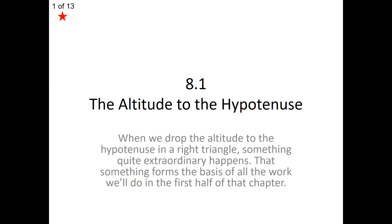Hello, this is Mr. Gemmler with the 8.1, the altitude to the hypotenuse lesson. What we're going to see today is a couple of things we are going to carry over from last chapter. Two of those things are what an altitude is — we saw an example of altitudes in the previous chapter — and similarity. Because of the work we did studying similarity, it's going to lead us into two significant theorems today. We'll start off by looking at a definition that will also lead us into these two theorems.